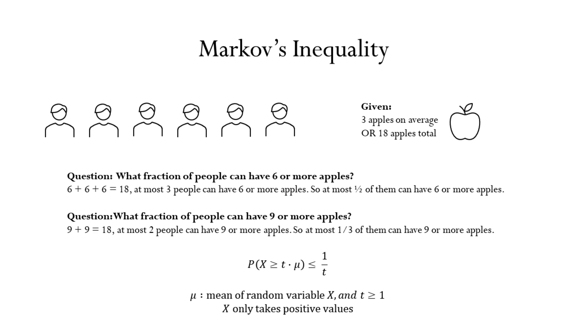Markov's inequality is really simple. Let's understand it through this example. Suppose you have six people. You are told that they have on average three apples. In other words, they have a total of 18 apples among the six of them.